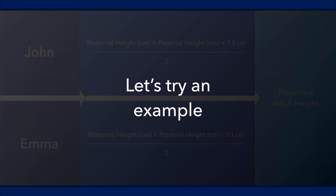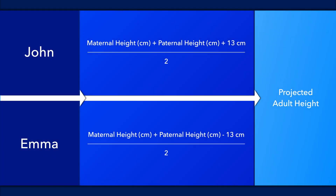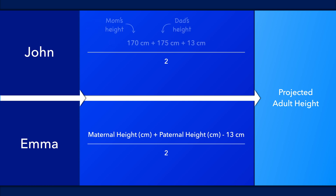Now let's try an example. First, we will estimate the height potential of a boy named John. His mom is 170 centimeters tall and his dad is 175 centimeters tall. After entering these values into the equation for mid-parental height, we find that his target height is 179 centimeters. With a genetic target height range of 8 centimeters above or below this value, his adult height will likely be between 171 and 187 centimeters.